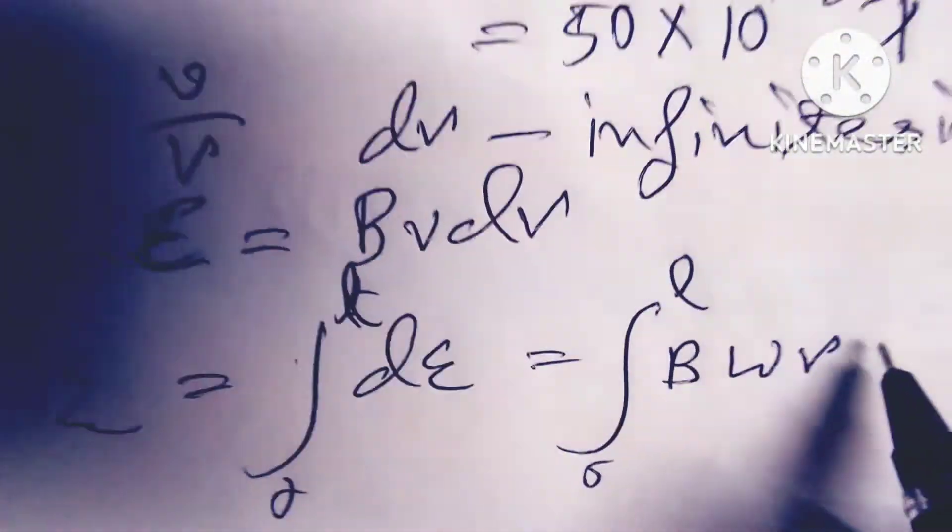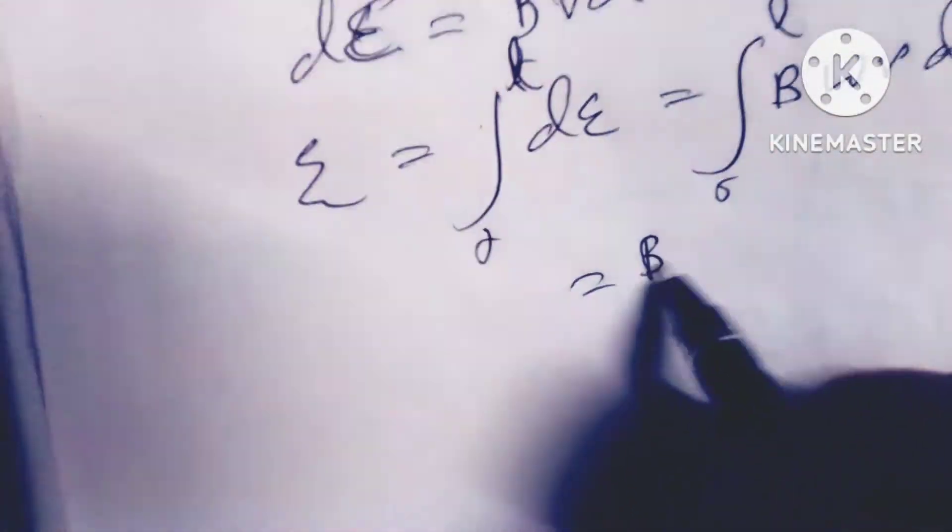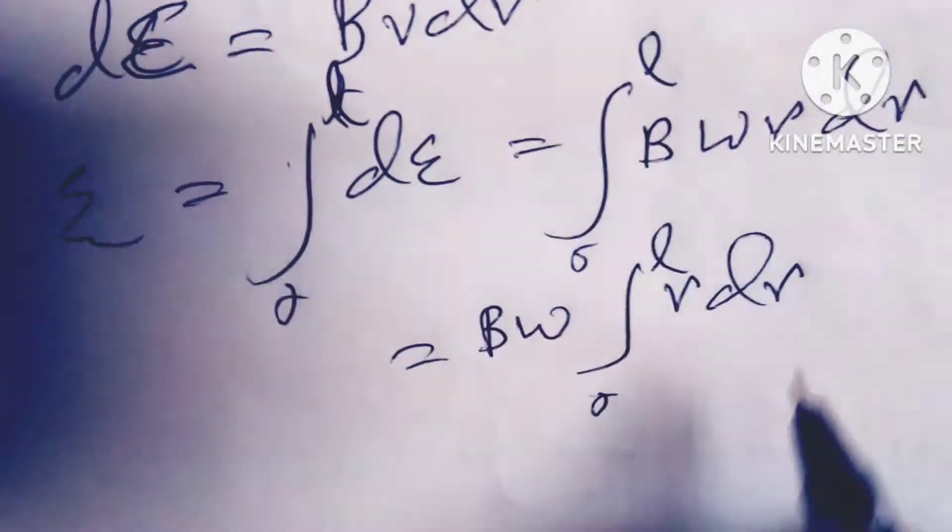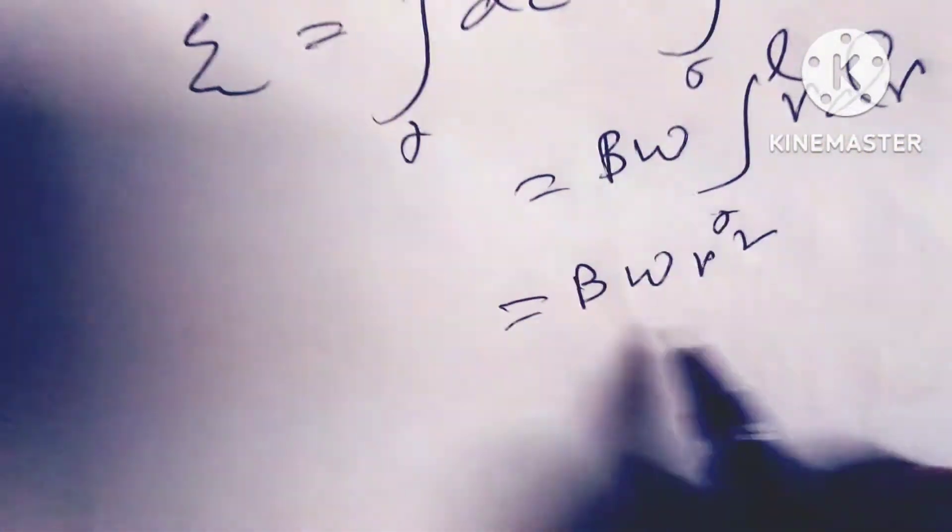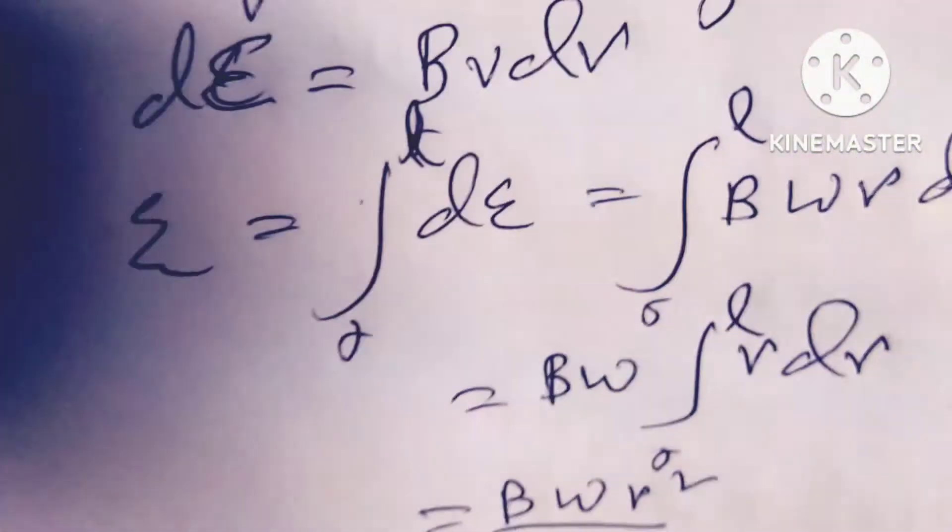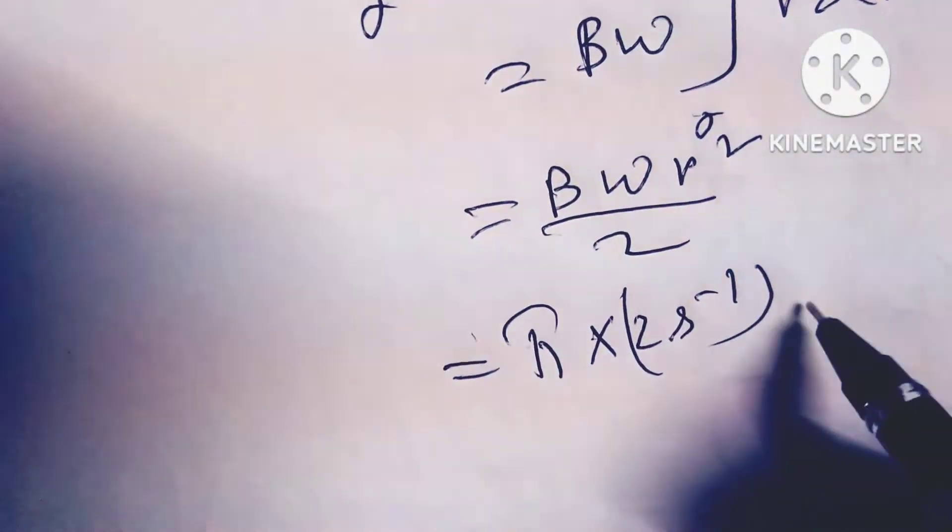Epsilon equals integral from 0 to L of d epsilon equals integral from 0 to L of B omega r dr, which equals B omega integral from 0 to L of r dr, equals B omega r squared divided by 2. So this is my point.